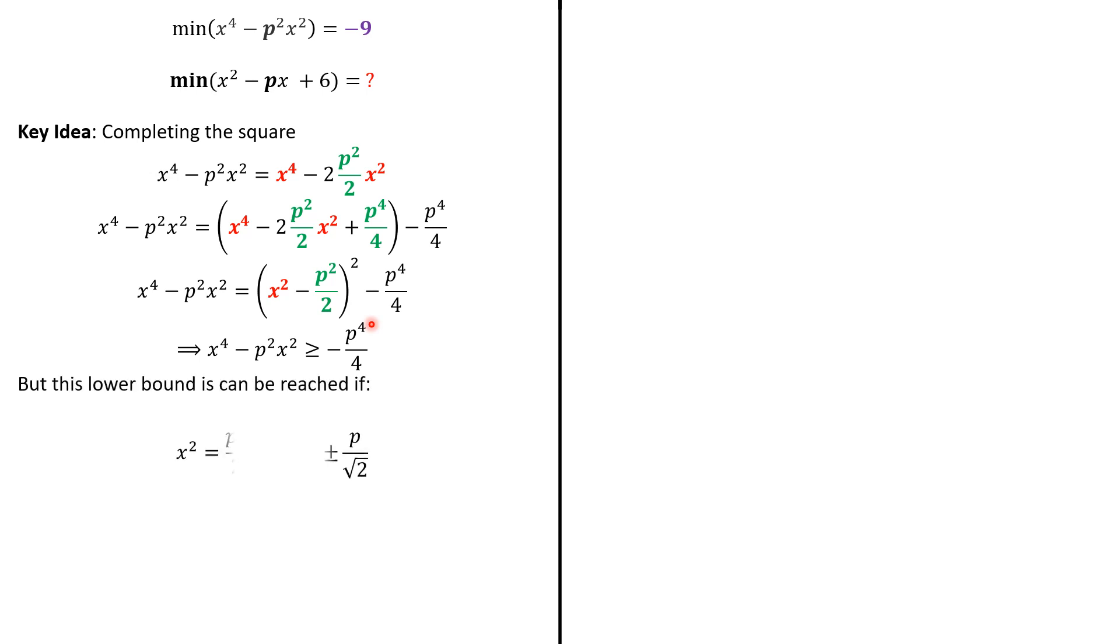So, we can reach it when x² equals p²/2. So, we can choose maybe p over the square root of 2 or negative p over the square root of 2. So, we know that the minimum value of this function is indeed -p⁴/4.